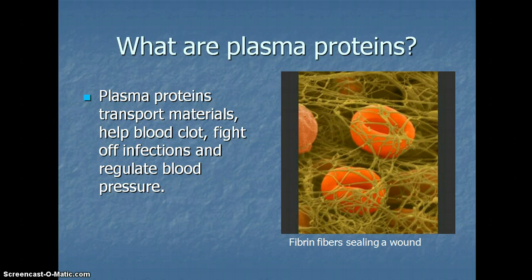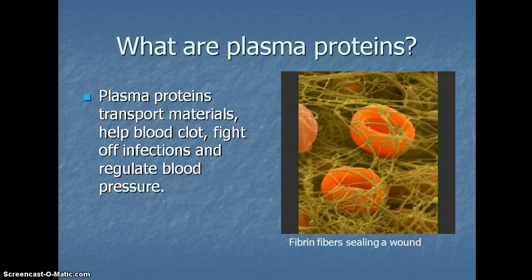Plasma proteins help transport material, help blood clot, fight off infections, and regulate blood pressure. If you want to know what plasma proteins feel like, the closest thing that you can find easily would be the white of an egg. The white of an egg is made of a protein, albumin, which is very similar to a plasma protein.